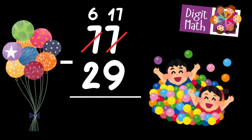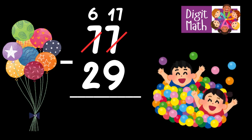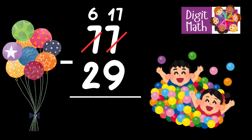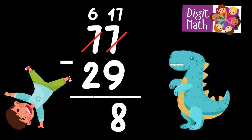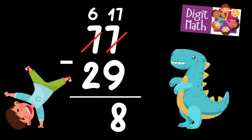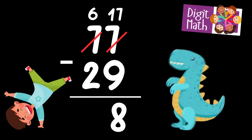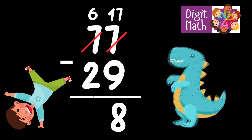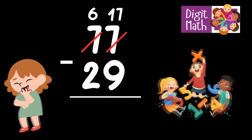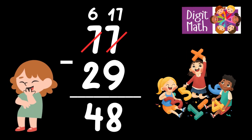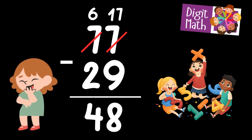Now, we have 17 in the Units column. Subtract 9 from 17, which equals 8. In the Tens column, we now have 6. Subtract 2 from 6, which equals 4. So the final result is: 77 minus 29 equals 48.